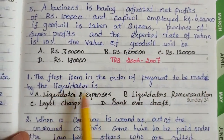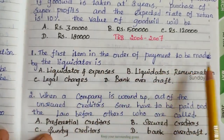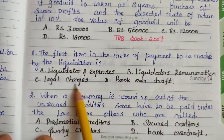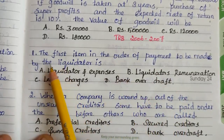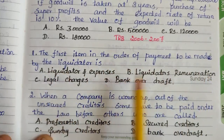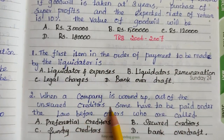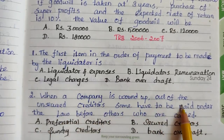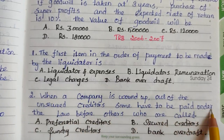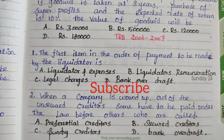Answer: C. Rs.1,20,000. Next question from TRB 2006-07: The first item in the order of payment to be made by the liquidator is — options: liquidation expenses, liquidator remuneration, legal charges, bank overdraft. Answer: C. Legal charges. When a company is wound up, out of unsecured creditors, some are paid first under law — these are called preferential creditors. Answer: A. Preferential creditors.